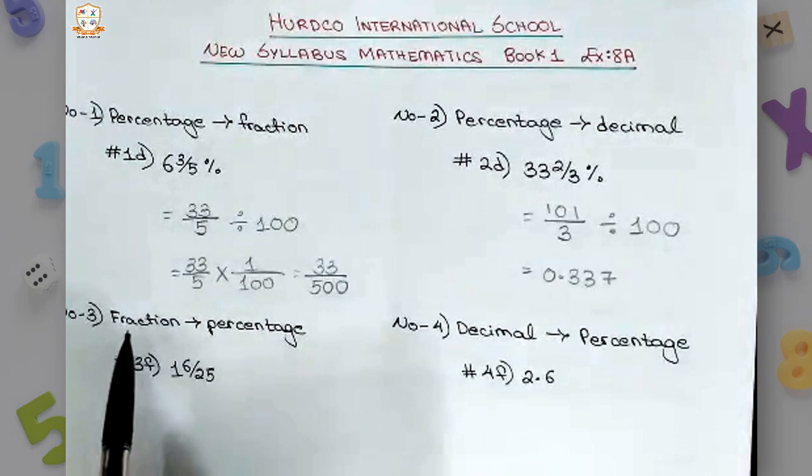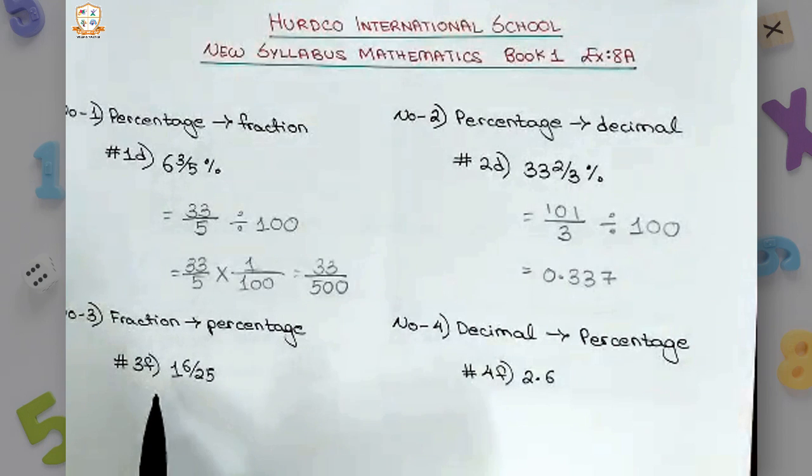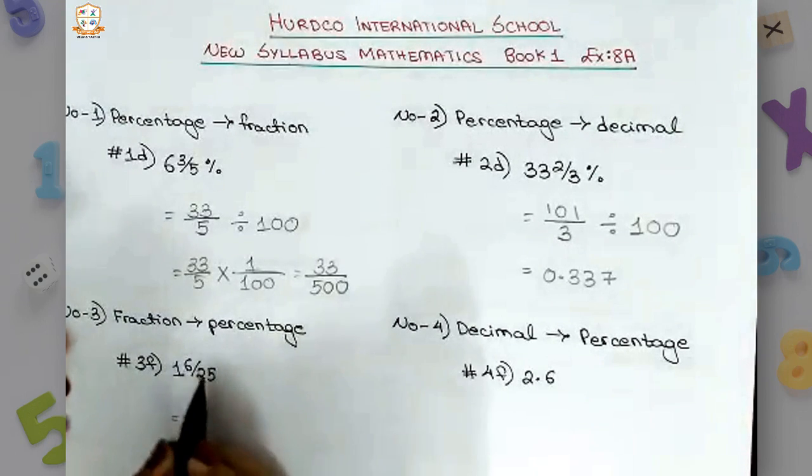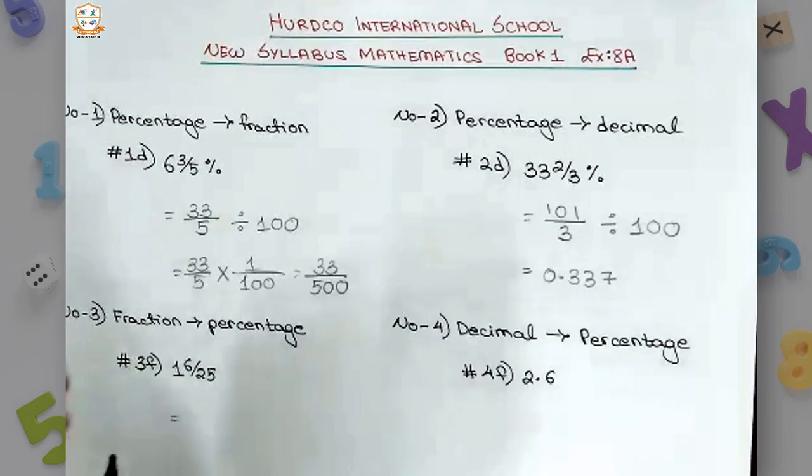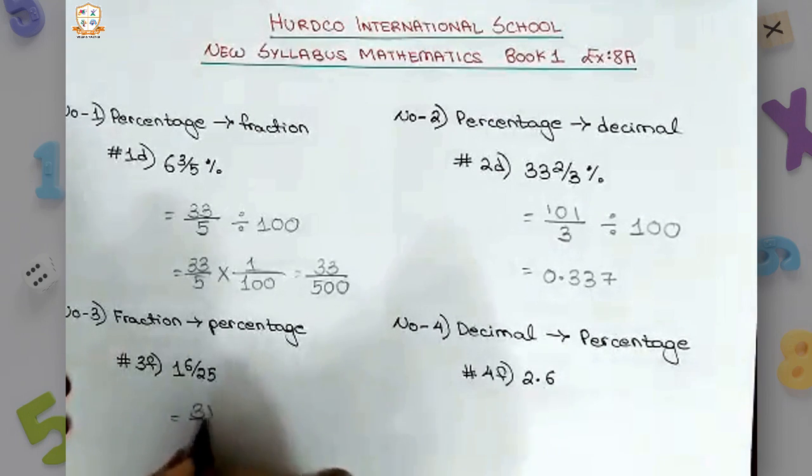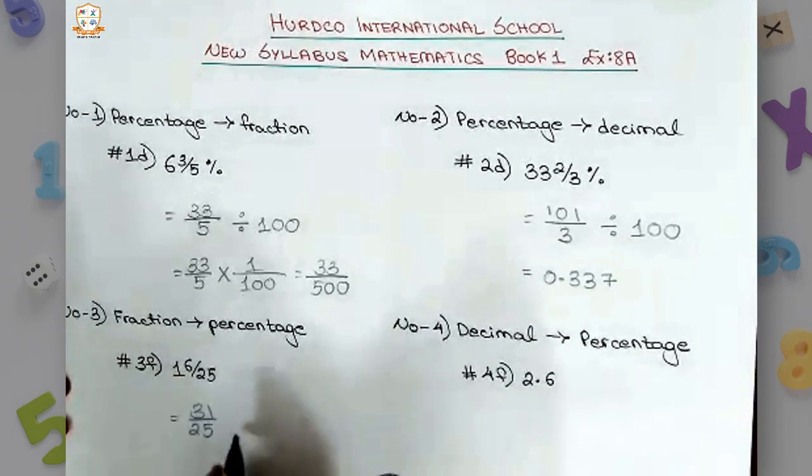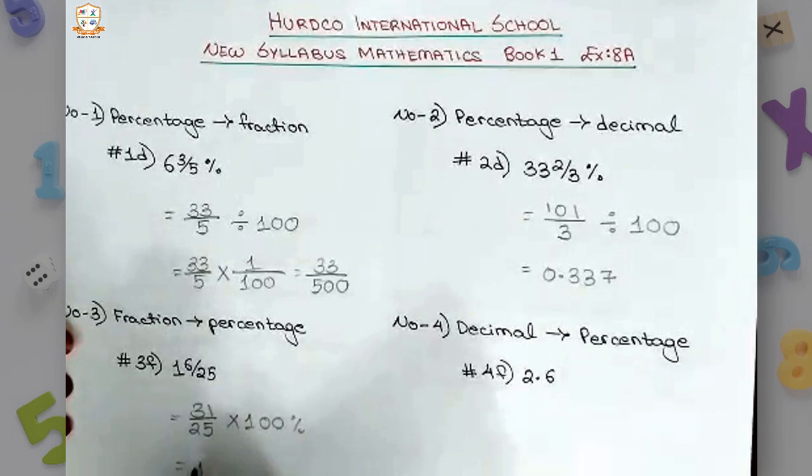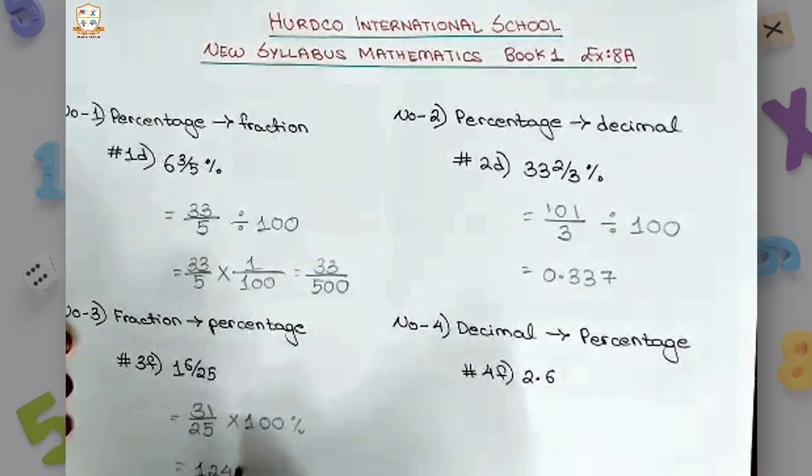Number 3 asks us to convert from fractions to percentages. Number 3f is the mixed number 1 whole 6 by 25. In this case, first we convert the mixed number into a fraction, which will be 31 by 25, and this will be multiplied with 100 percent. So the resulting answer will be 124 percent.